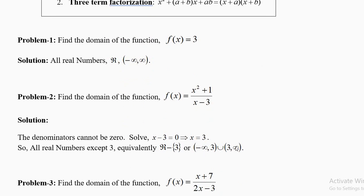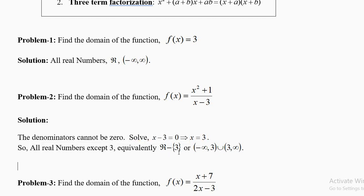Find the domain of f(x) = (x² + 1)/(x − 3). There is no square root. The only problem comes when x = 3, which gives division by 0, and that is not allowed. So the domain is all real numbers except 3. You can write this as ℝ − {3}, or in interval form as (−∞, 3) ∪ (3, +∞). The round bracket means 3 is not allowed.